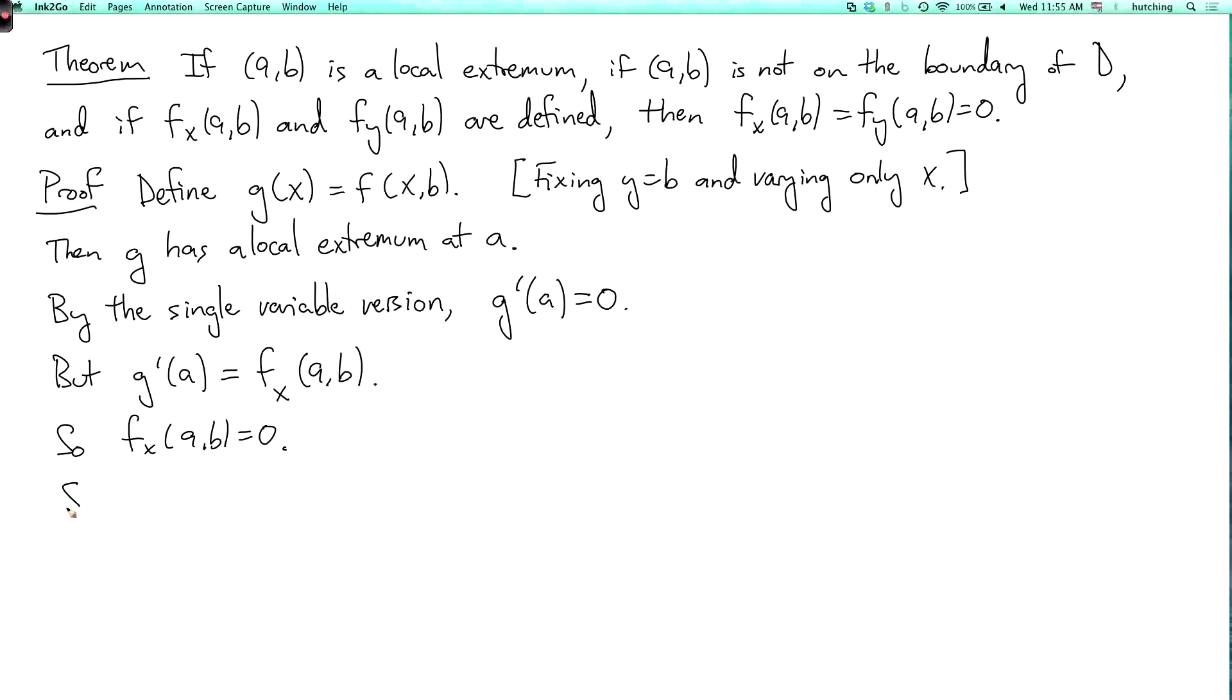So then that proves that fx(a,b) equals zero. And similarly, fy(a,b) is equal to zero. So here you need to fix x equals a and vary y and do the same argument. So that's the proof.